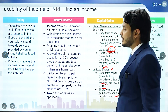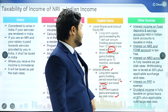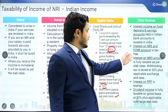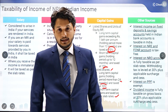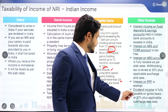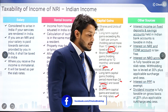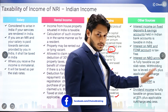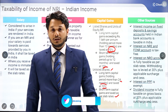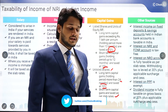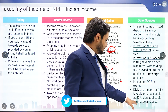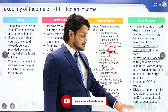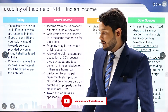For other common incomes: interest income on fixed deposits and savings accounts held in Indian bank accounts is simply taxable in India as it accrues and arises in India. Interest on NRE and FCNR accounts is tax-free as it is exempt. Interest on NRO accounts is fully taxable with a withholding tax of 30 percent. Interest on PPF is exempt, and dividend income is fully taxable on a gross basis at 20 percent plus applicable surcharges.